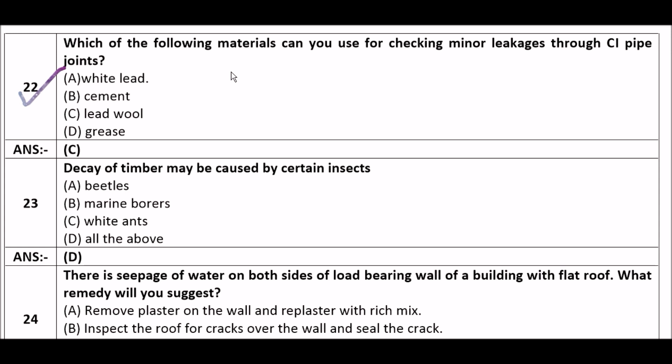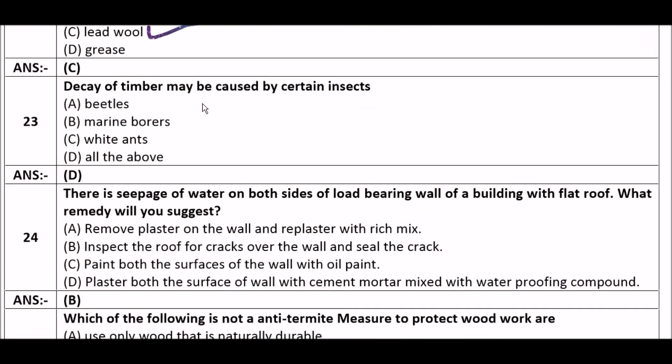Question 22: Which of the following materials can be used to check minor leakage through CI pipe joints? Option A: white lead, option B: cement, option C: lead wool, option D: grease. The right answer is option D — all of the above.